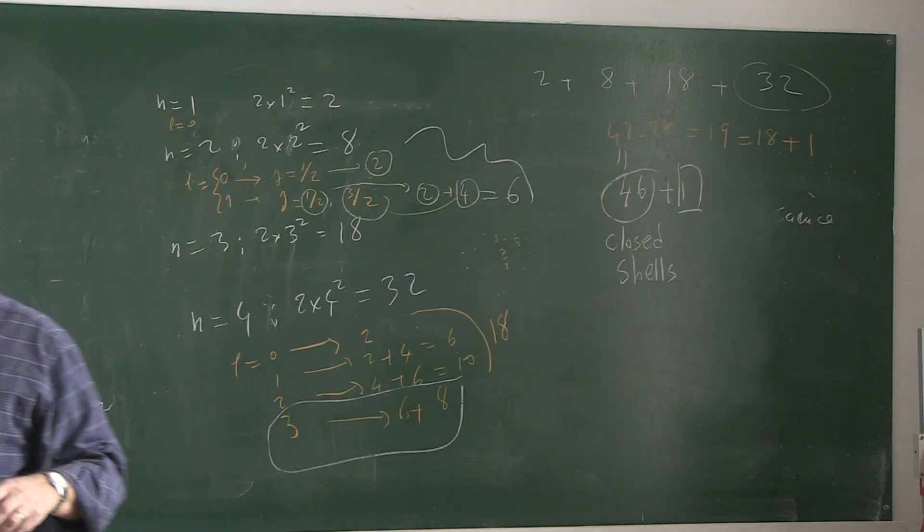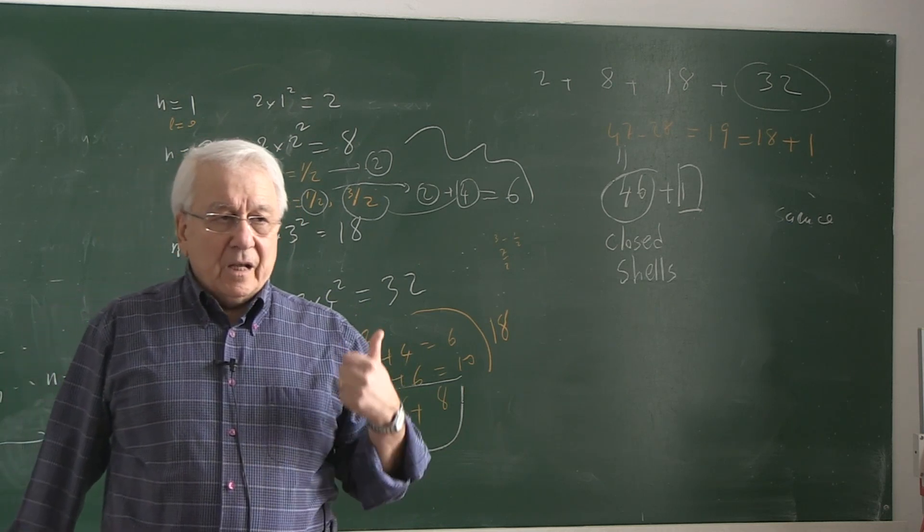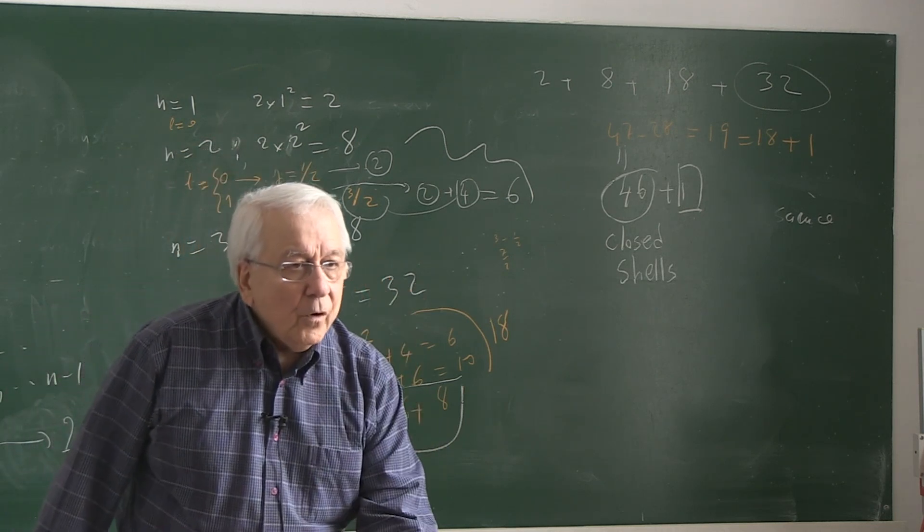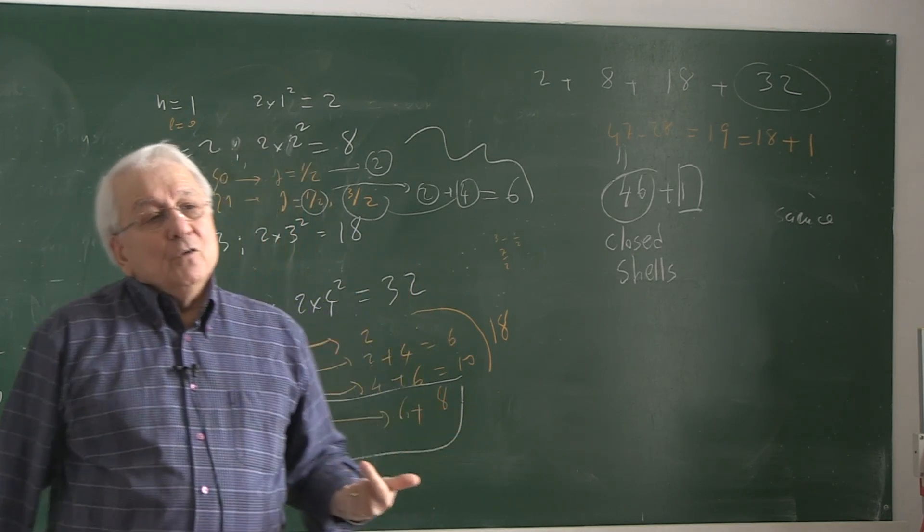All the closed shells, if you neglect the nuclear spin, you have to really convince yourself why you have to neglect the nuclear spin, then the net spin of the atom except the outermost electron is 0. Outermost electron is a single electron carries spin 1 half.